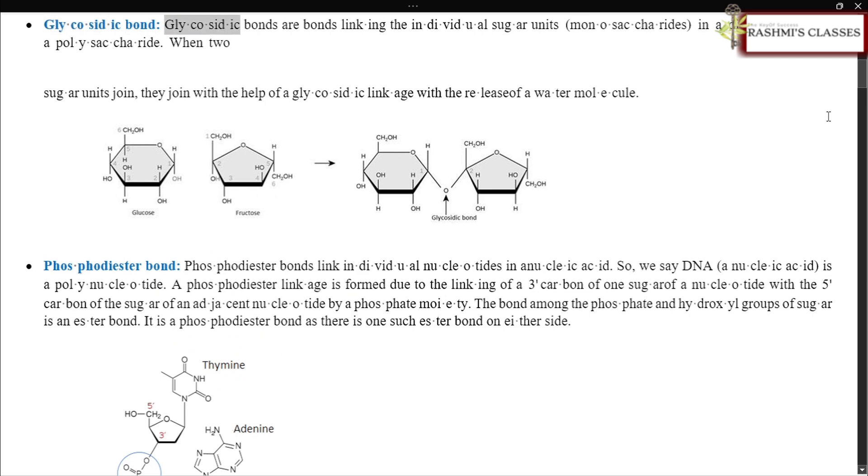Glycosidic bond. Glycosidic bonds are bonds linking the individual sugar units, monosaccharides, in a disaccharide or a polysaccharide. When two sugar units join, they join with the help of a glycosidic linkage with the release of a water molecule.